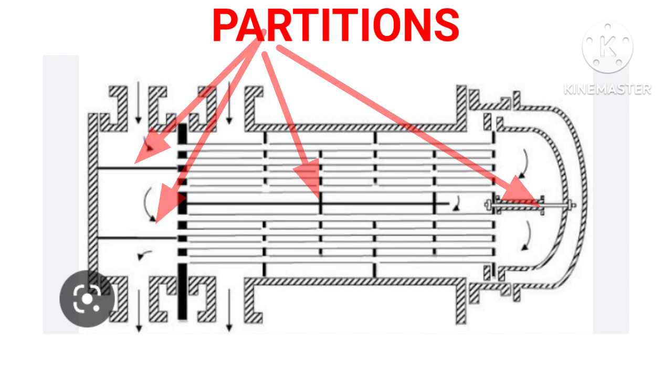Hence, multi-pass construction decreases the cross-sectional flow path, which increases flow velocity. Due to this, heat transfer coefficient also increases. But these also have certain disadvantages, such as multi-pass construction becomes complicated and also creates high friction losses.